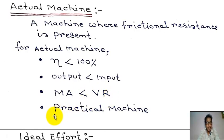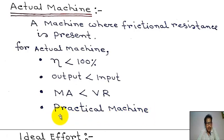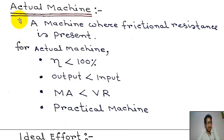Actual machines are practical machines — they exist in actual practice, whereas ideal machines are not possible in reality.